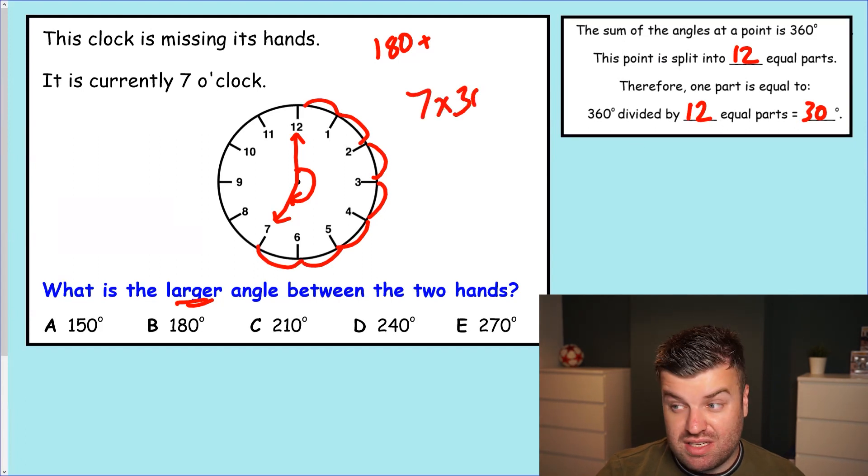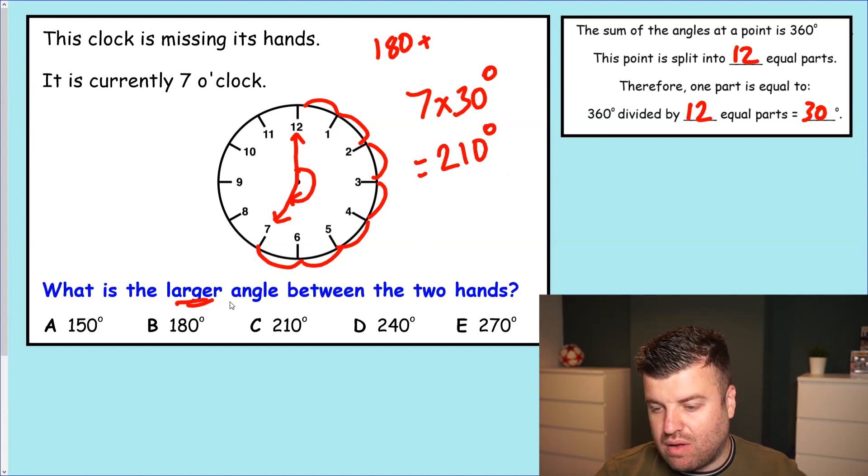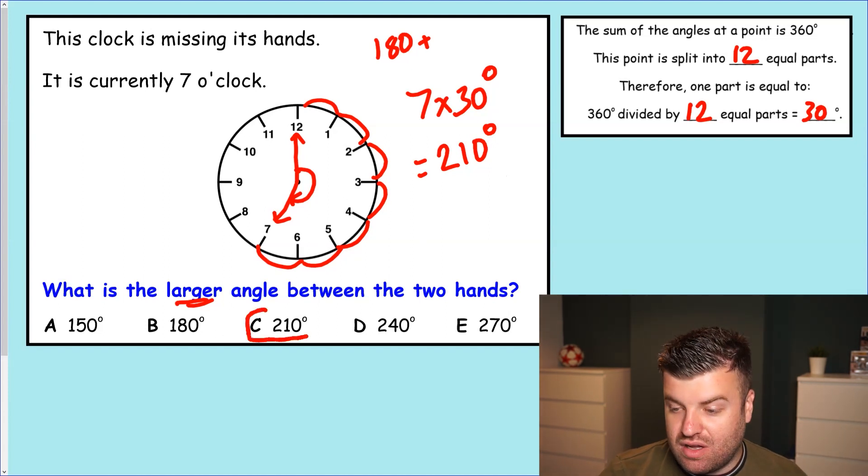Well, we know each part there was 30 degrees. 7 lots of 30 degrees is 210 degrees. I'm just going to check really quickly that that makes sense. Is it greater than 180? Yes. So it looks like it's about right. We're going to put C as our answer, and we're going to move on.